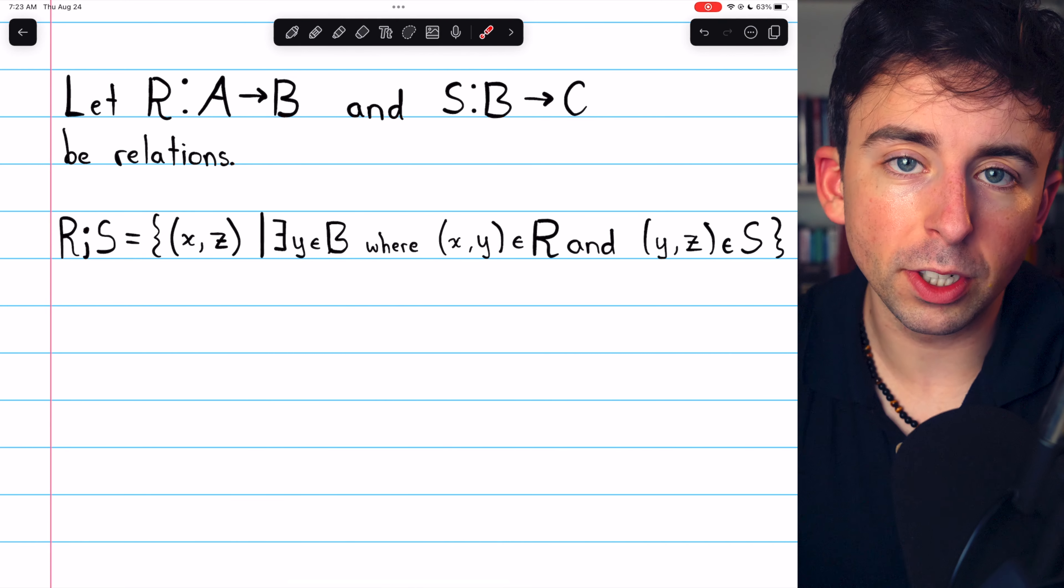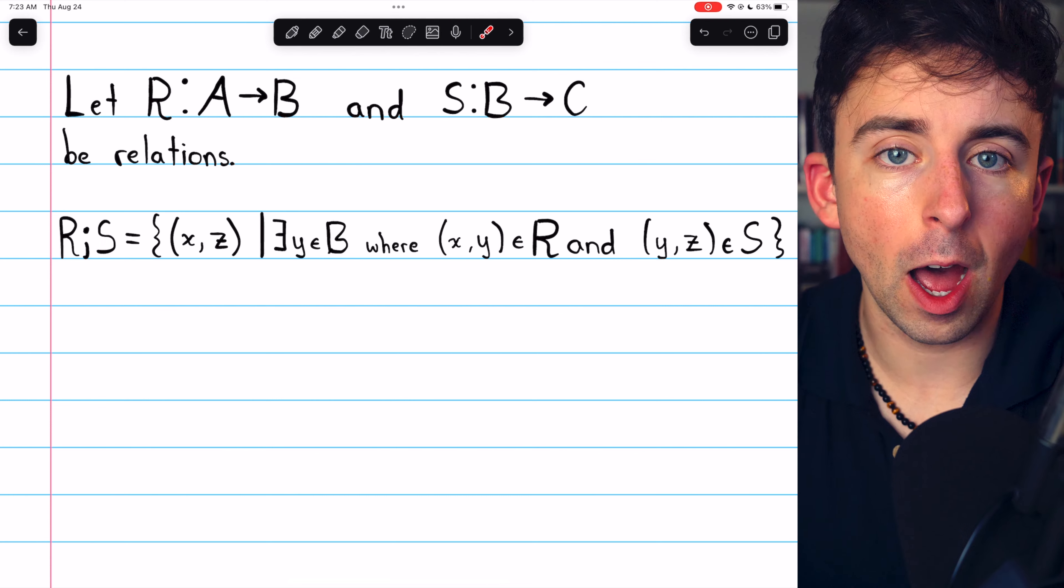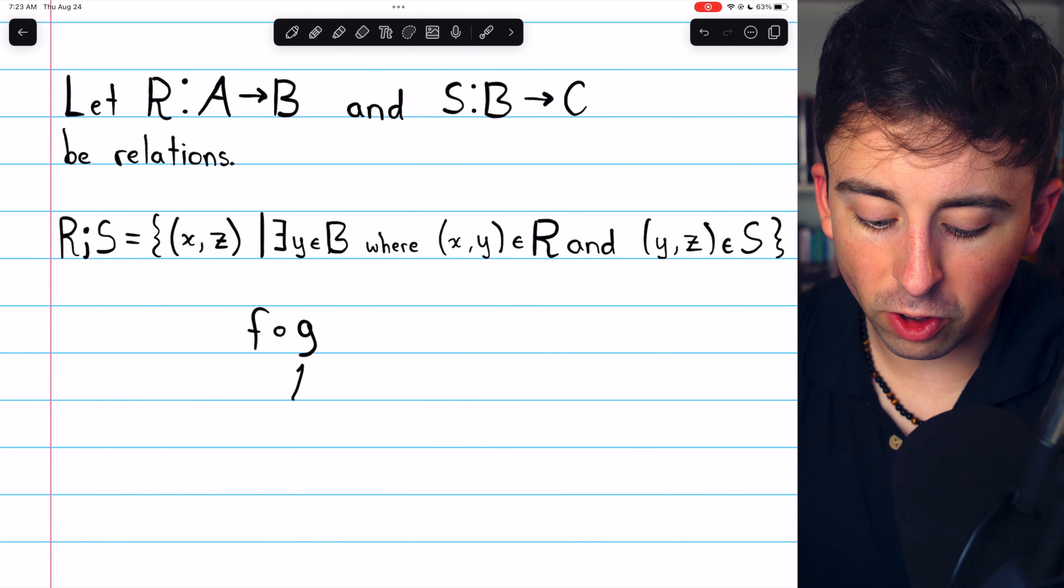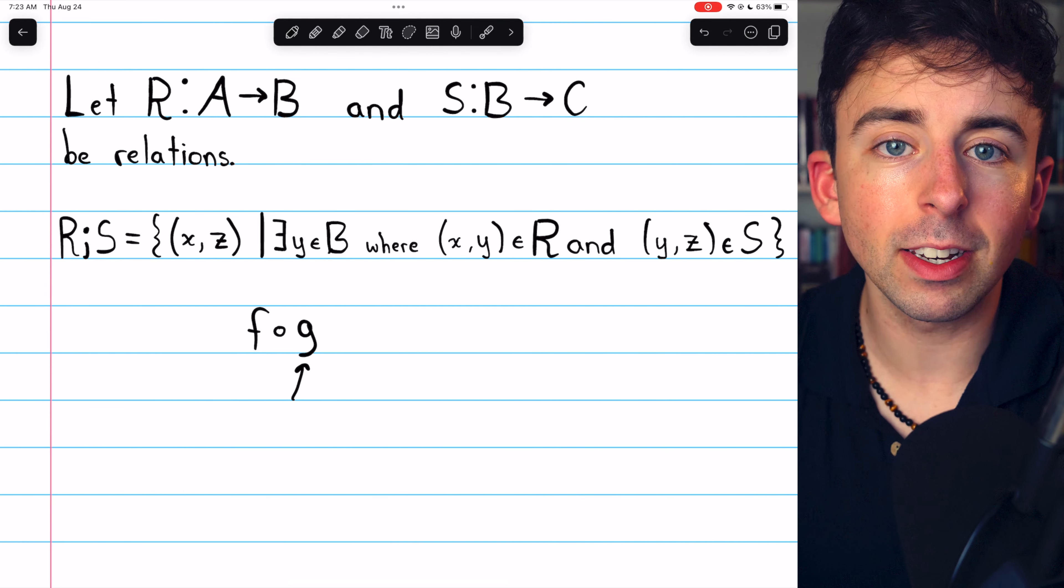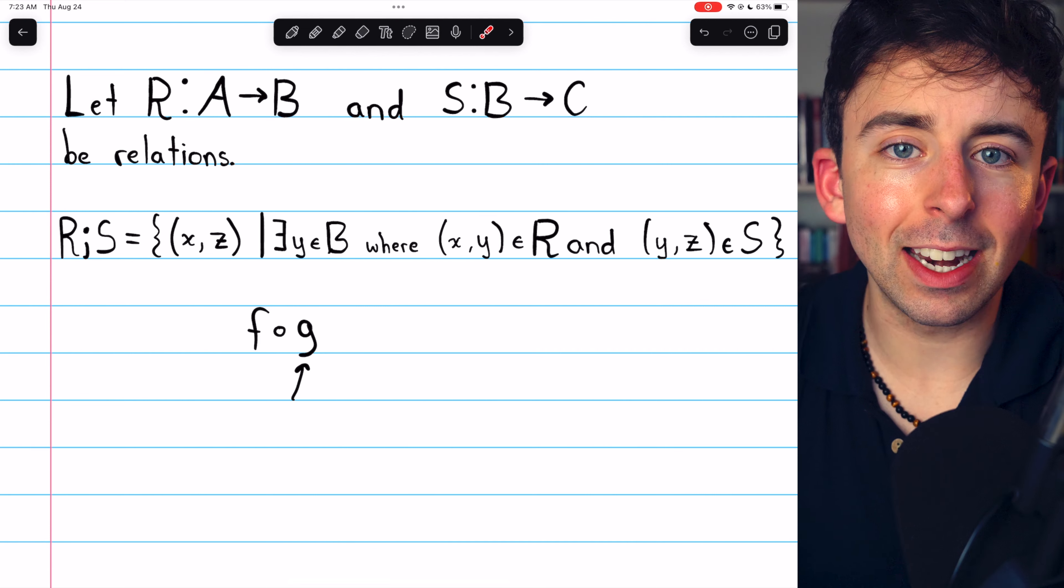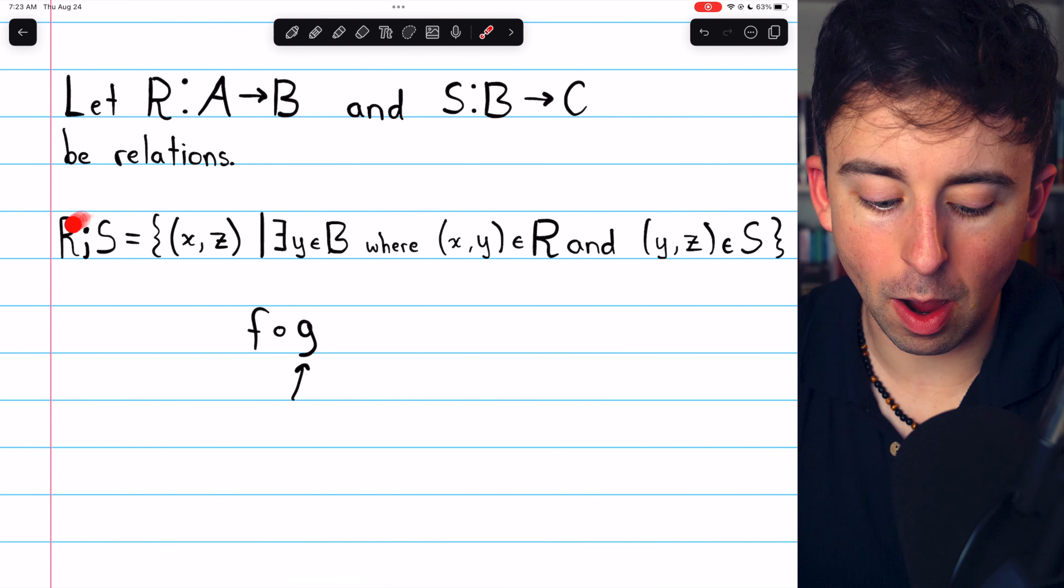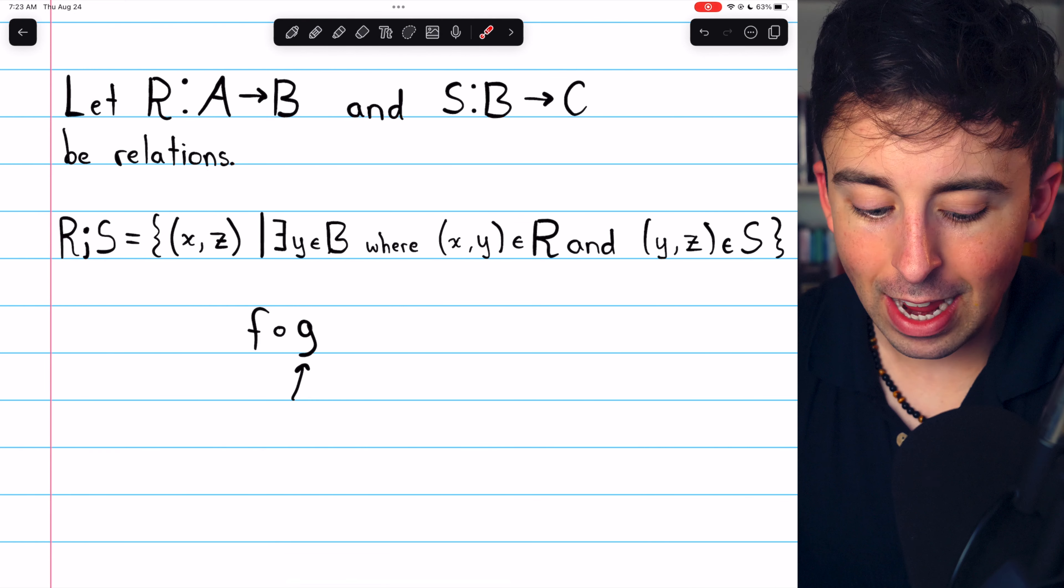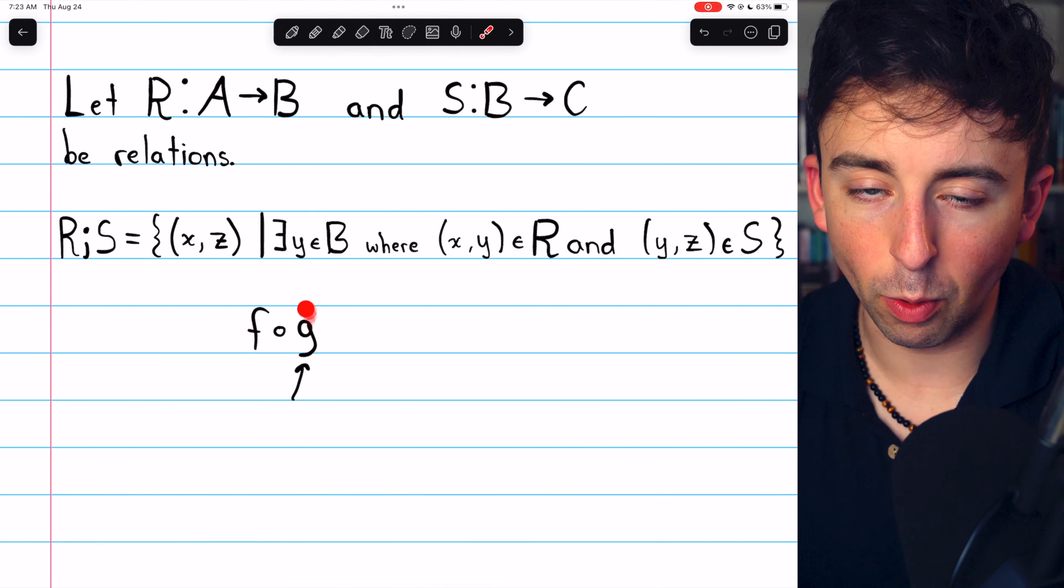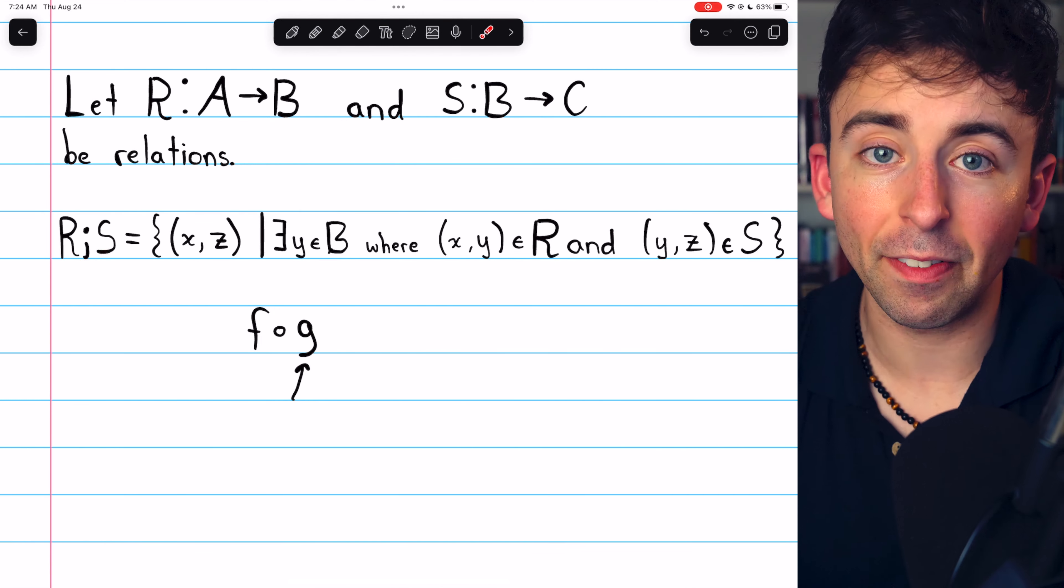This semicolon notation is one such option. You may also recall that with function composition, the second function is typically applied first. The order is from right to left. There doesn't seem to be an agreed-upon standard for the composition of relations. In this case,